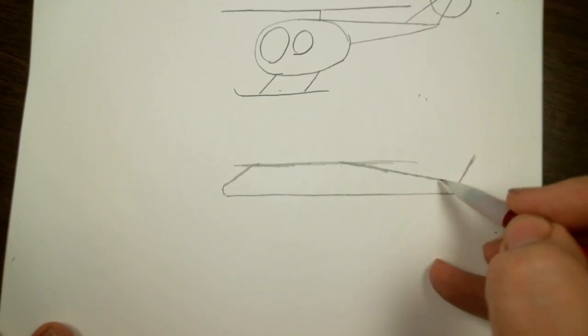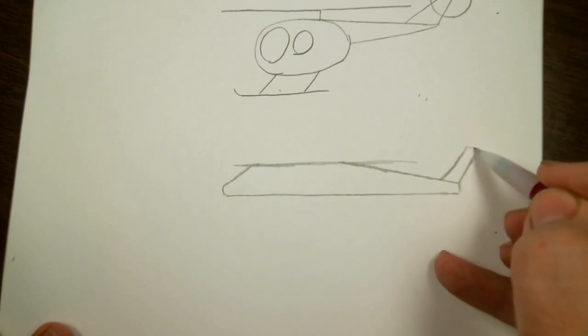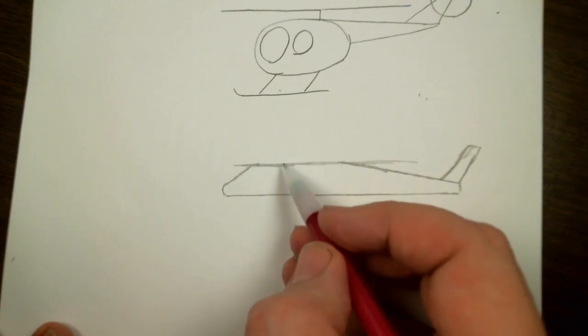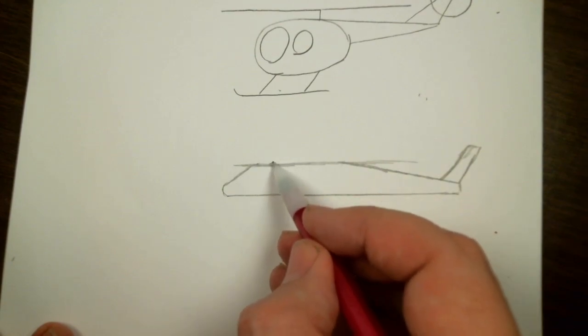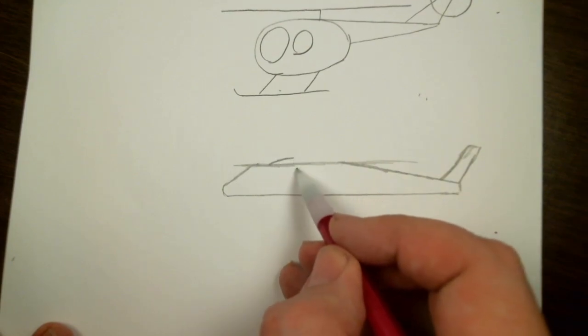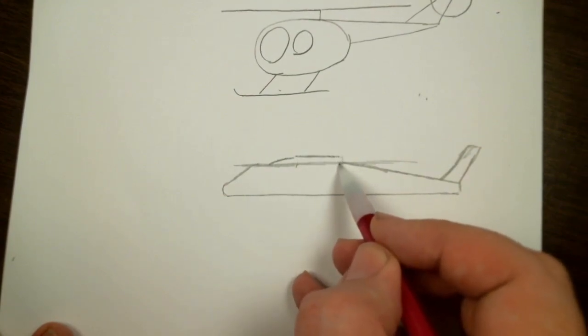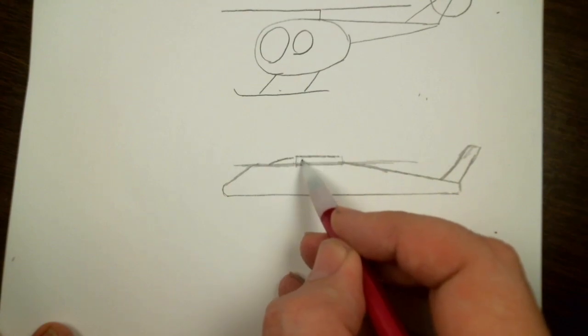And then we're going to make a straight line and a straight line and a straight line on top. And there's the tail. And then we're going to make a little box on top. So this is going to go up. And then go straight. And here's our engines up on the top of the helo.